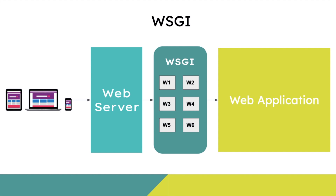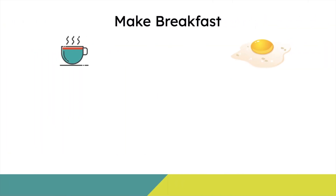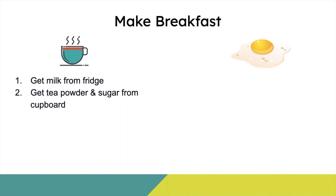Now let's move on to ASGI, using the same example of making tea and omelet. Let's start by making the tea. I'll get milk from the fridge and then the tea powder and sugar from the cupboard. Then I'll warm the milk — but this is going to take some time, around five minutes. Before the milk is warm, I don't want to add tea powder and sugar. So should I just wait till it is warm? I can actually start making the omelet and most probably even finish it by the time the milk gets warm. So I go ahead and do just that.